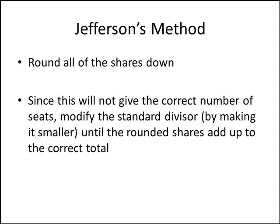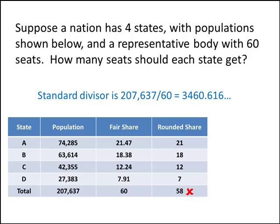We take those fair shares and round them down. So take 21.47, round that down to 21; take 18.38, round that down to 18, and so on. That gives us 58 seats, which is of course not enough. We want a total of 60 seats assigned to all the states.